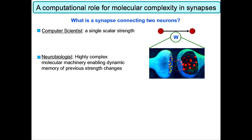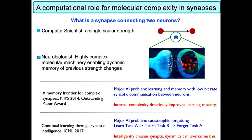If you take this capability seriously, you can actually solve interesting fundamental problems in AI. For example, one major AI problem is doing learning and memory with low bit rate synaptic communication between neurons, say in a mobile cell phone. If you take into account this internal complexity, we were able to show that you can drastically improve the learning and memory capabilities of these networks. Another major AI problem is catastrophic forgetting: if you train an artificial neural network to learn task A and then learn task B, it'll forget how to do task A. But if you intelligently choose internal synaptic dynamics, you can overcome this problem.